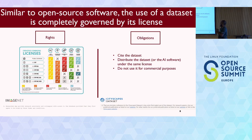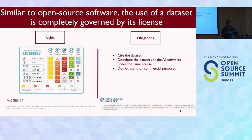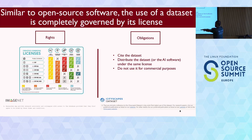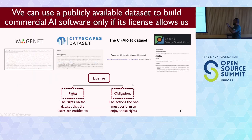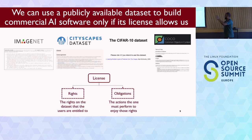However, as with most things in the world, datasets have licenses. And each license has rights and obligations. Rights tell you what you can do with the dataset - these are the things you are entitled to do, and the things that are not allowed. Obligations are: if you use that right, what are the things you have to do so that you can continue to enjoy those rights? We can abstract it out: a license outlines rights and obligations.